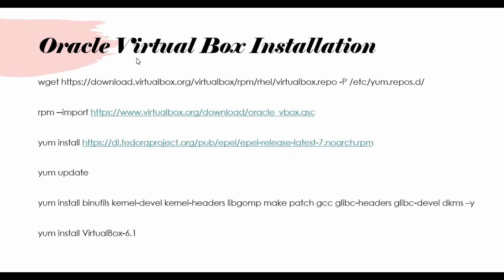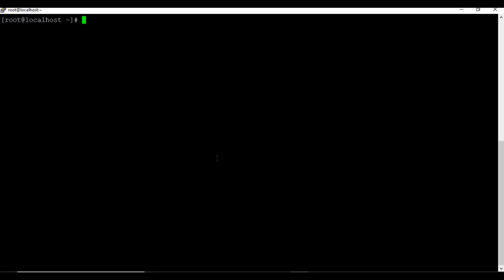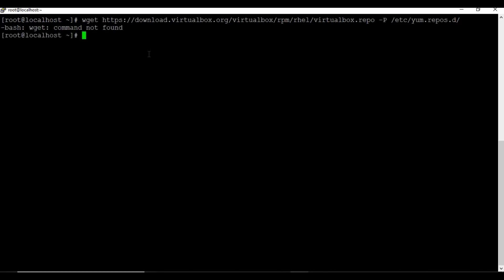We have completed the installation of Docker as well. Let's move on to the next step, which is to install the virtualization software. I am using Oracle VirtualBox. This process will take some time as we need to download around 500 to 600 megabytes of data. Follow the commands from my GitHub location.